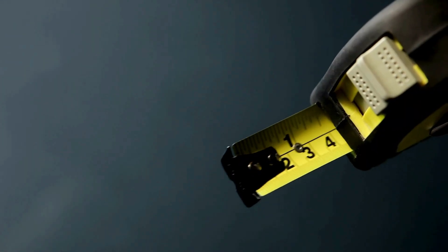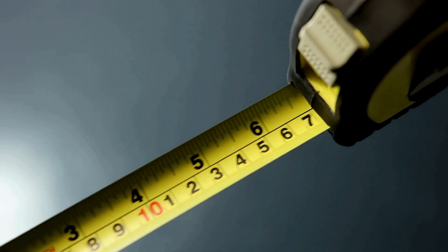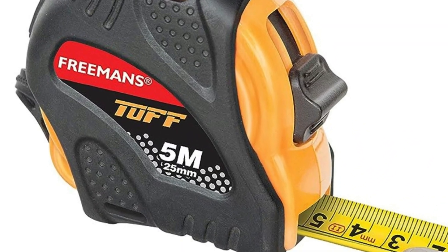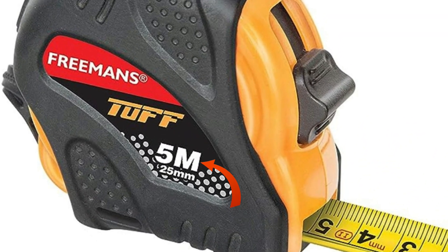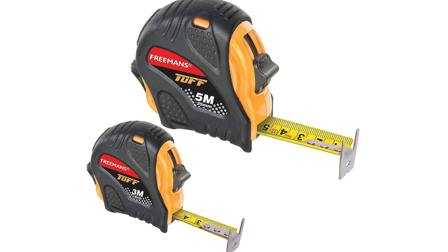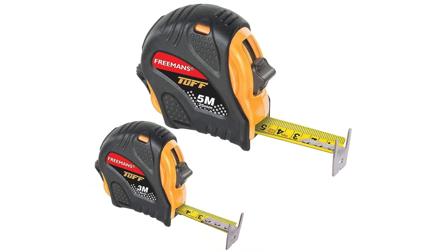First of all, let's look at the length of the tape measure. This will usually be printed on the measuring tape's label. For pocket measuring tapes, common lengths are 3m, 5m, 7.5m, and 10m.